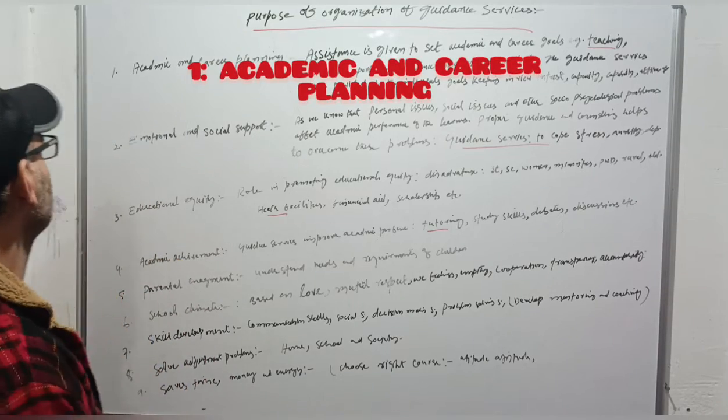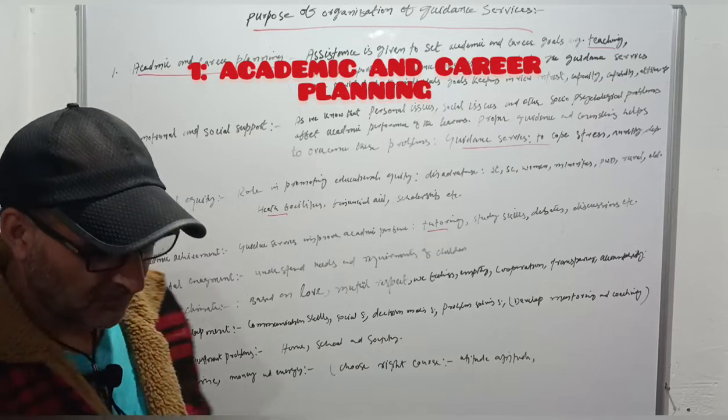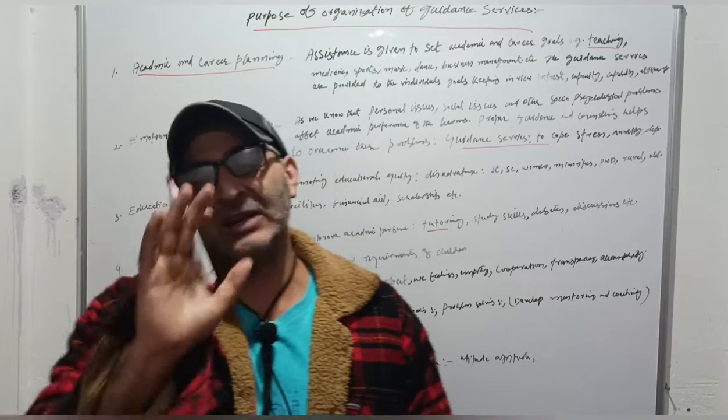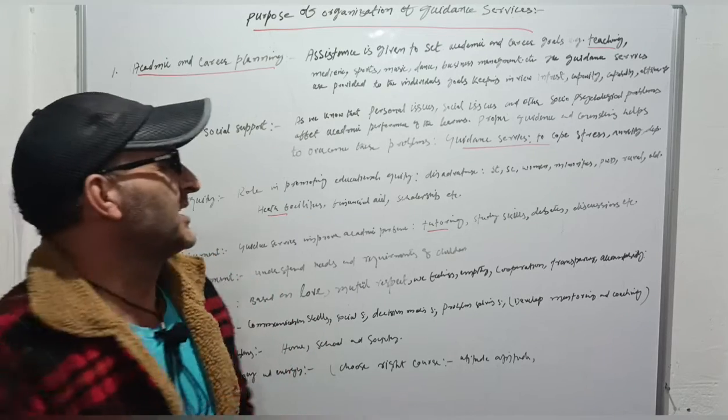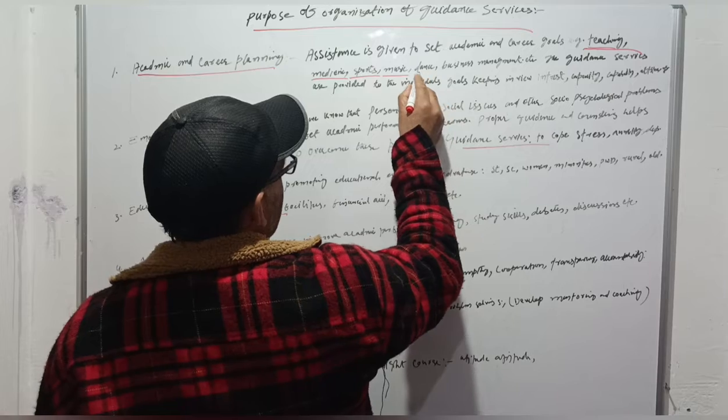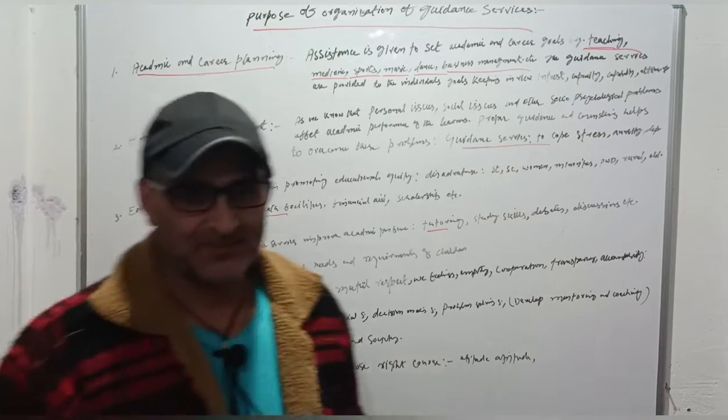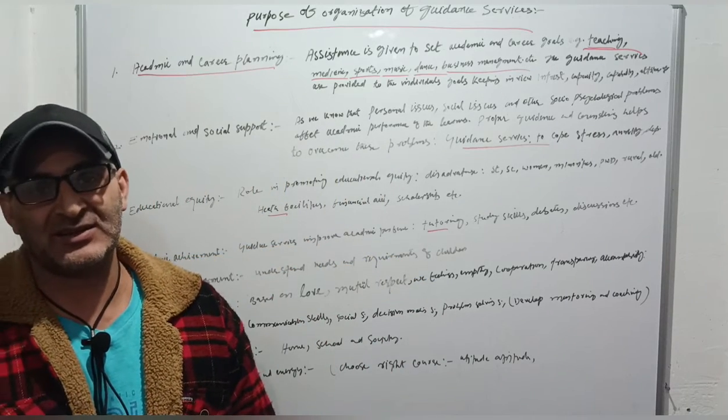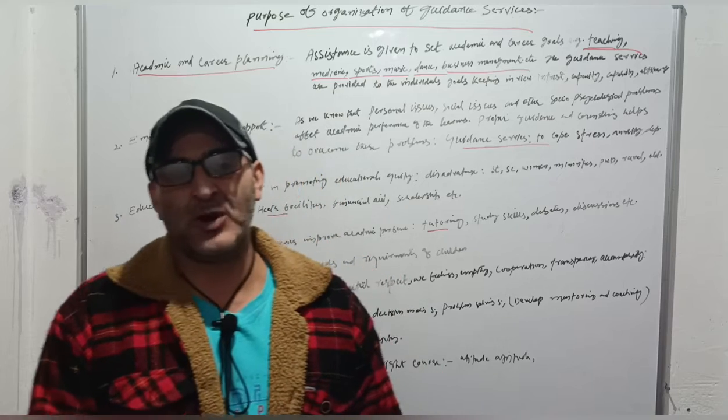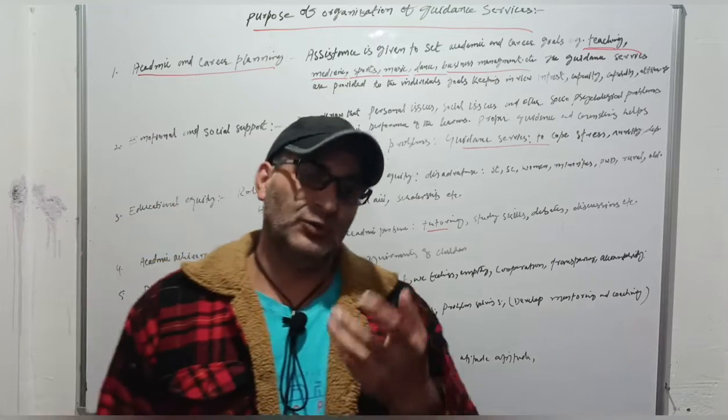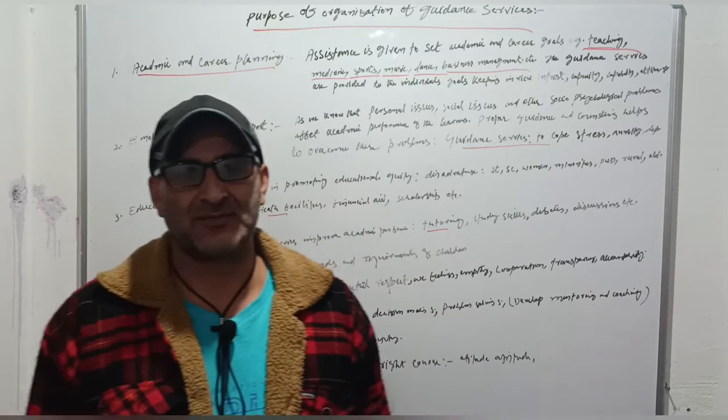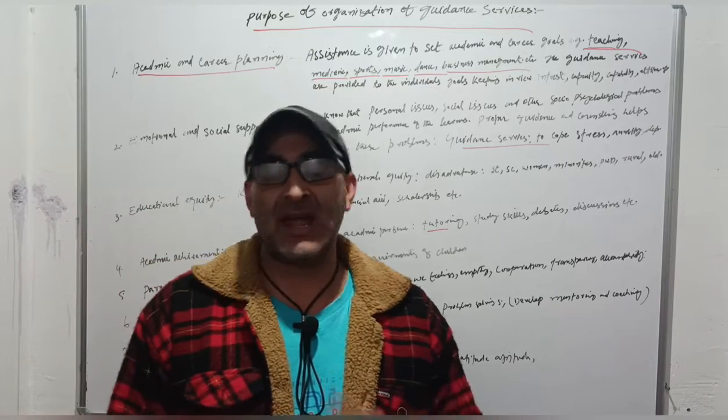Academic and Career Planning: The guidance services are provided to the learners in order to set academic and career goals, for example, teaching, medicine, sports, music, dance, business management, etc. These are various career goals or academic goals where the learner is imparted guidance. As we know that guidance is a scientific process.